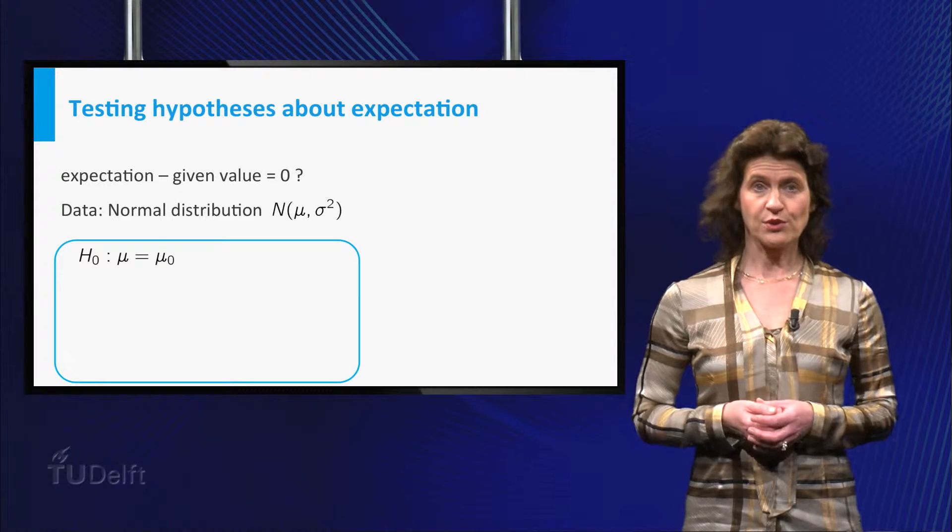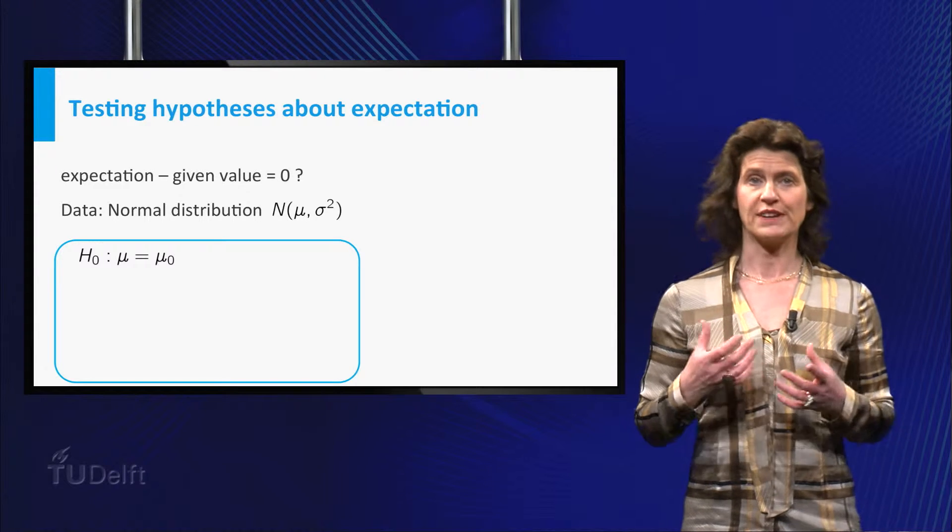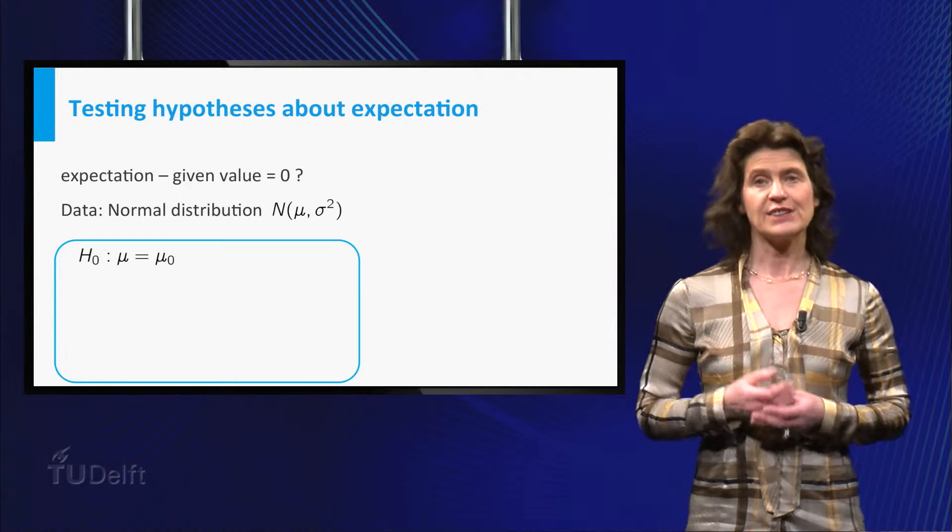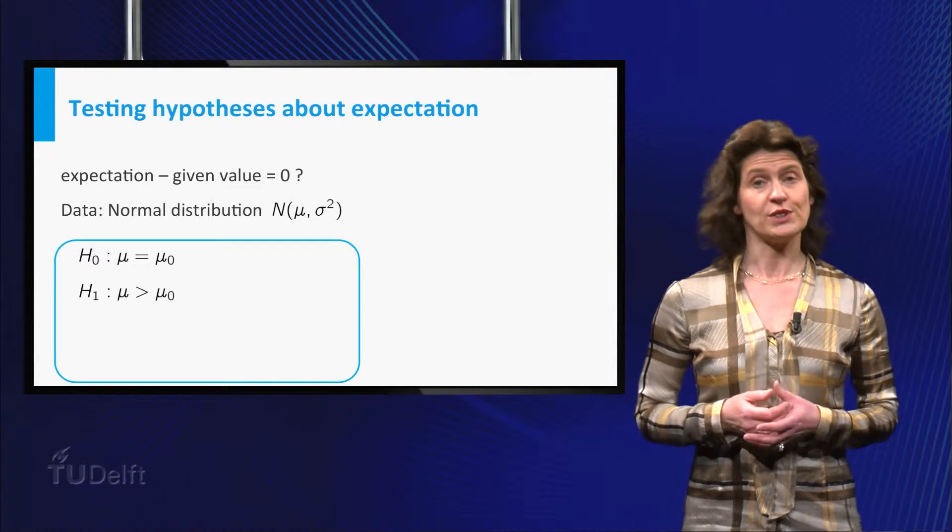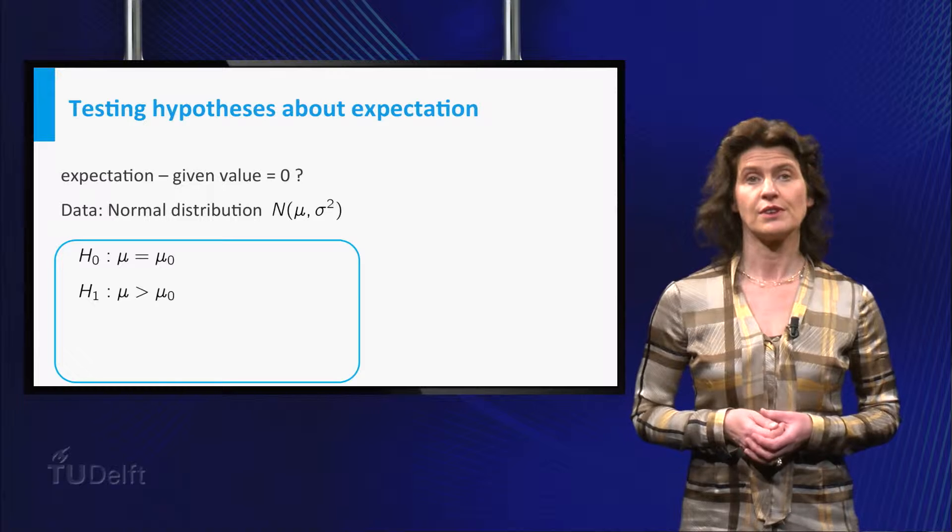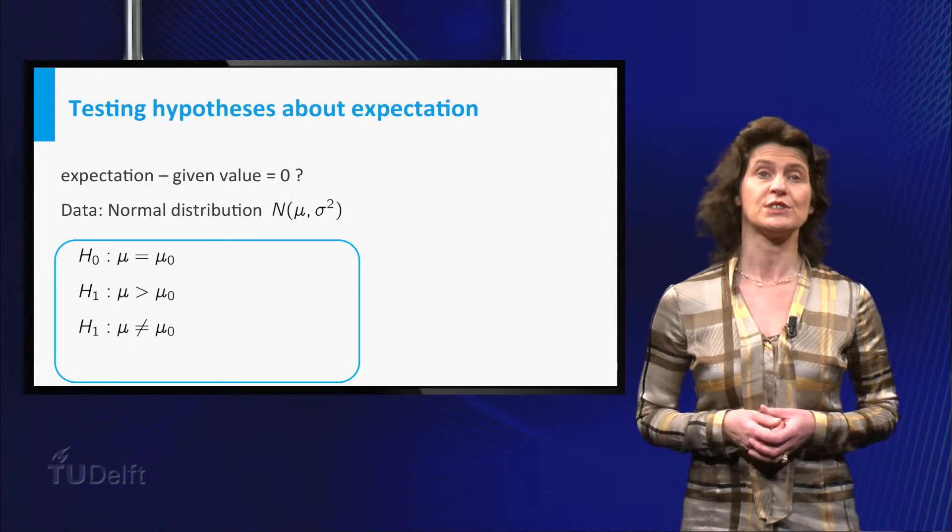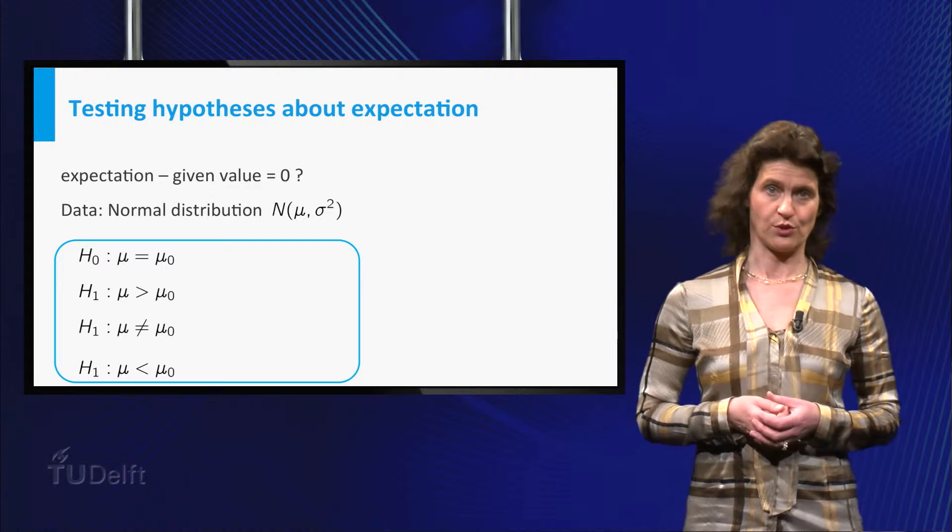You test the null hypothesis mu is equal to some given mu 0 against one of the following alternative hypotheses: mu is greater than mu 0, mu is not equal to mu 0, or mu is smaller than mu 0.